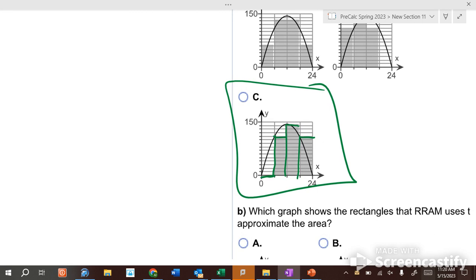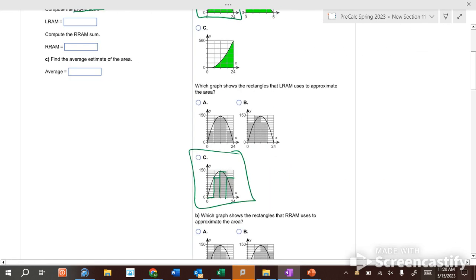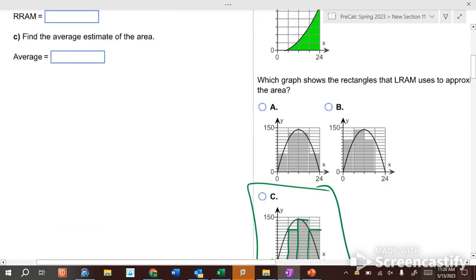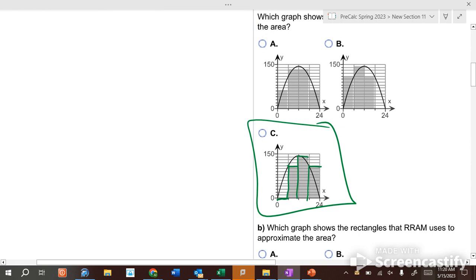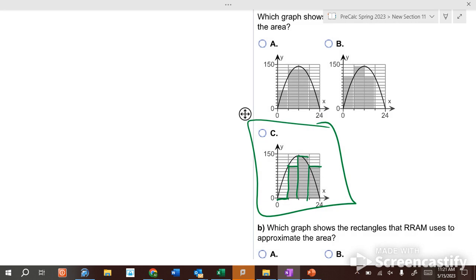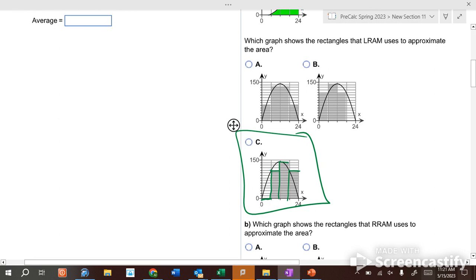How do we calculate the left RAM? It's an interval of 24 with how many rectangles? I think there's four: one, two, three, four. So how wide is each rectangle? Six wide. So the width will be six. For this one, the first rectangle has a height of zero and a width of six.